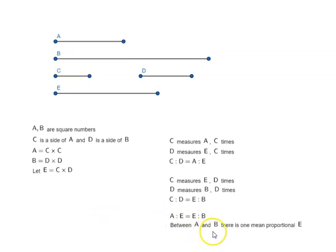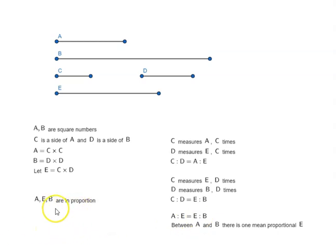Between A and B, there is one mean proportional E. Since we have A is to E equal to E is to B, you notice that A, E, B are in proportion. And since they are in proportion,